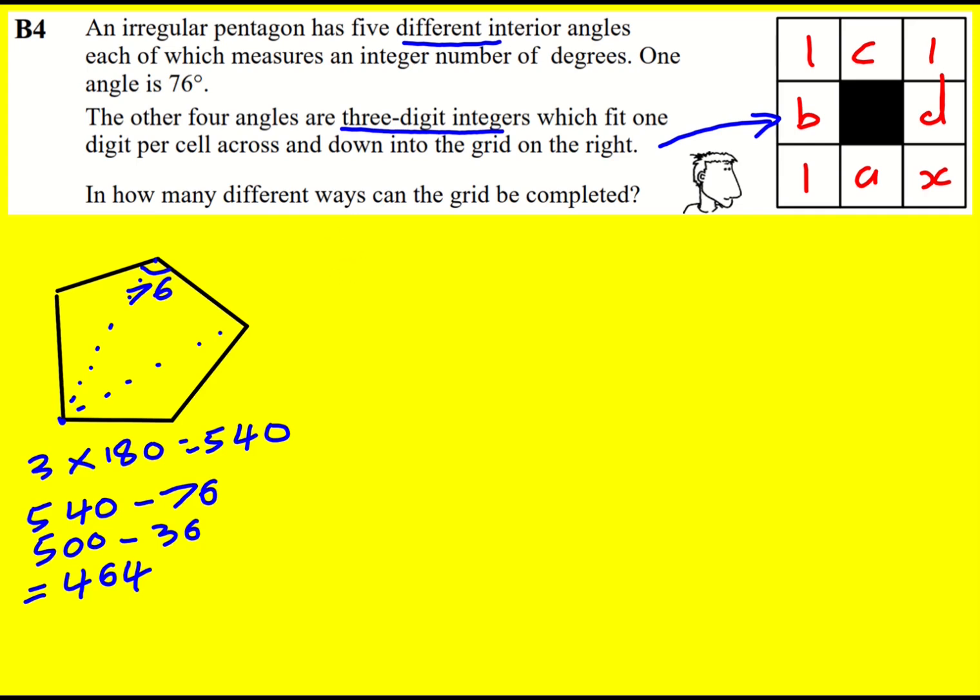So what this means, if I write these numbers in digit form, then I've got 1c1 plus 1dx plus 1ax plus 1b1 equal to 464. But if I minus 400 from both sides, still in digit form, we'll get c1 plus dx plus ax plus b1 equals 64.